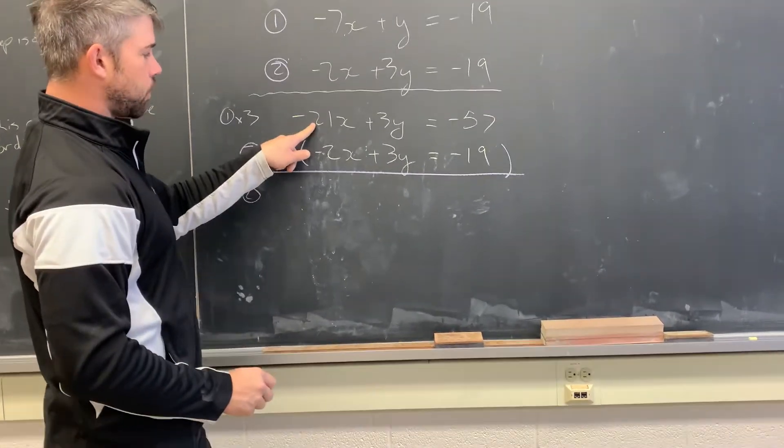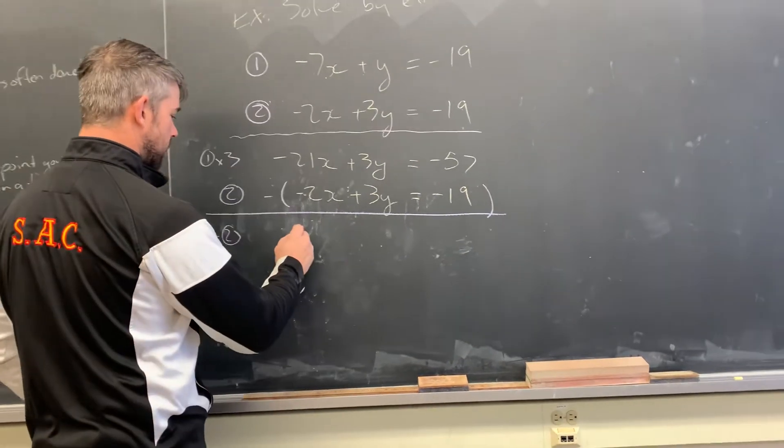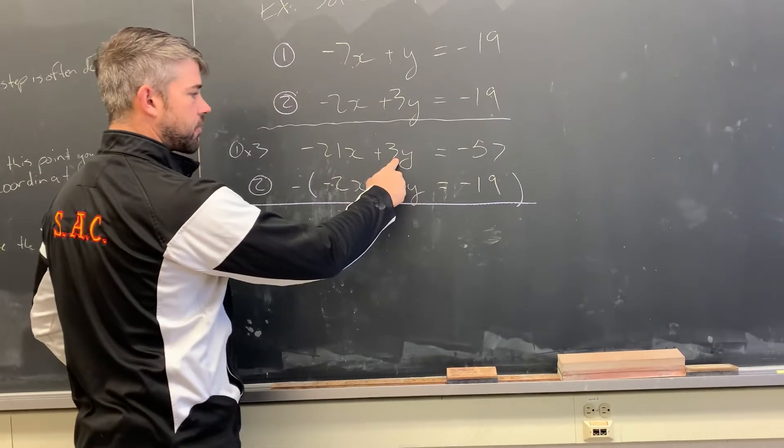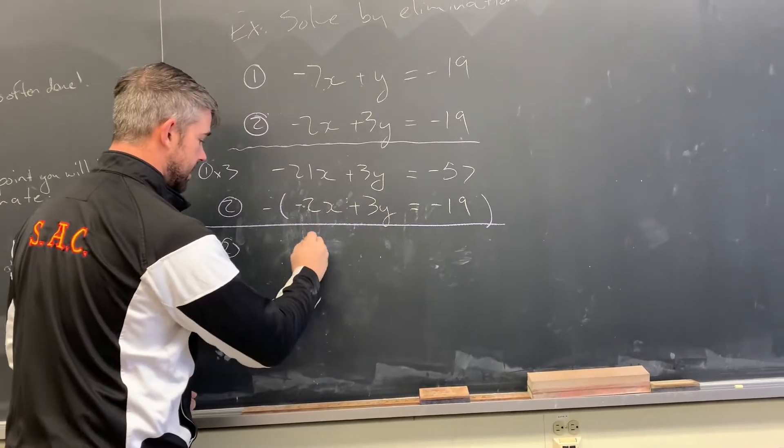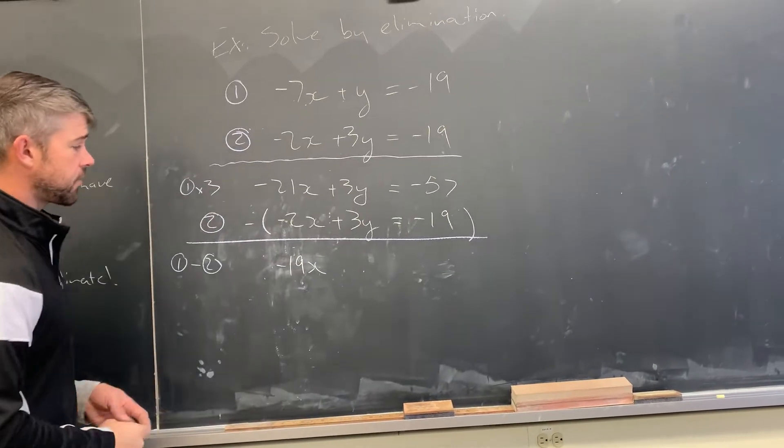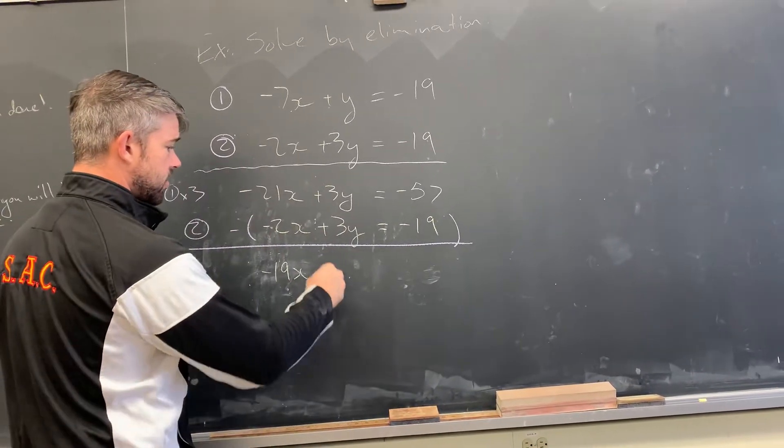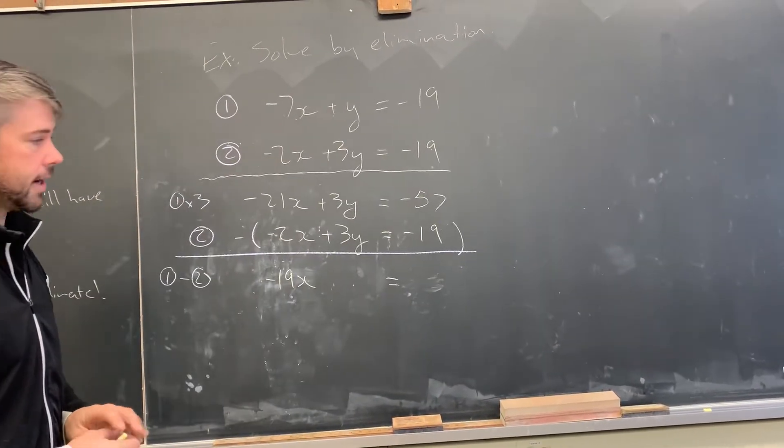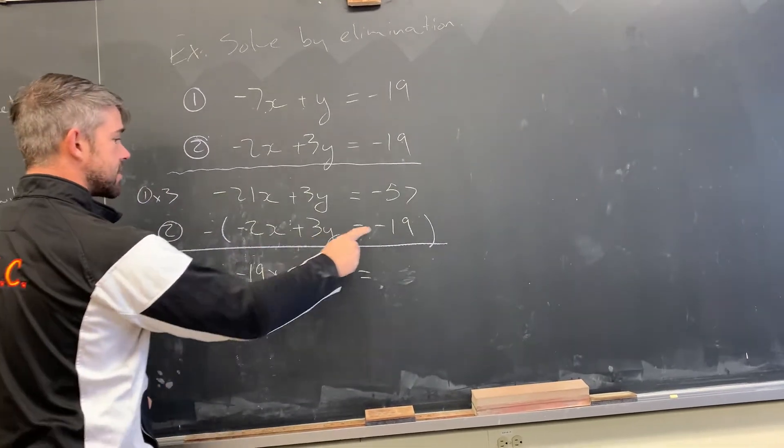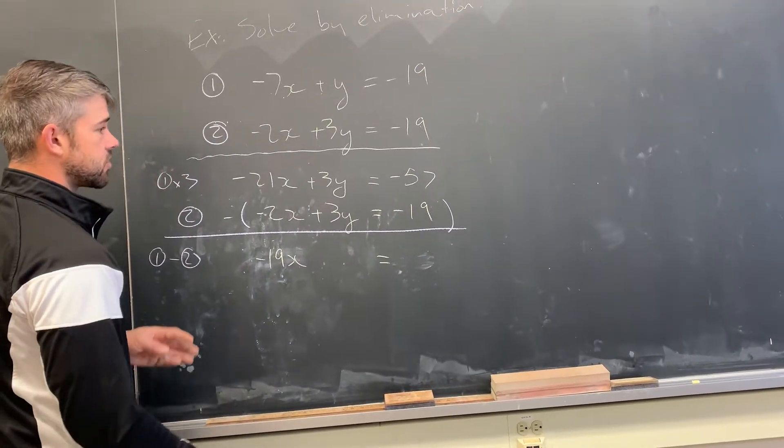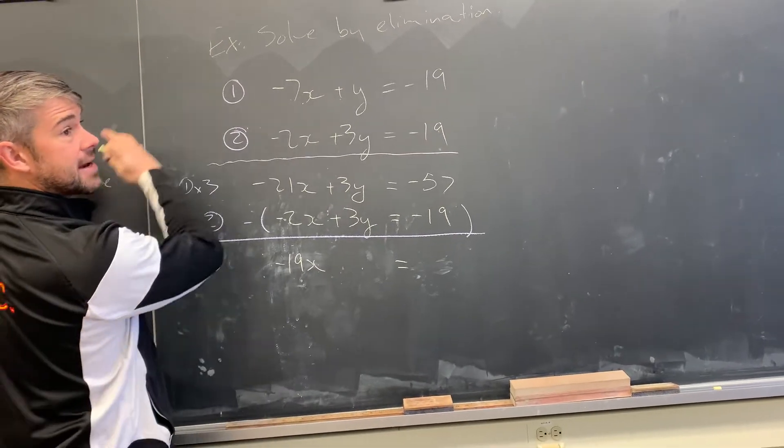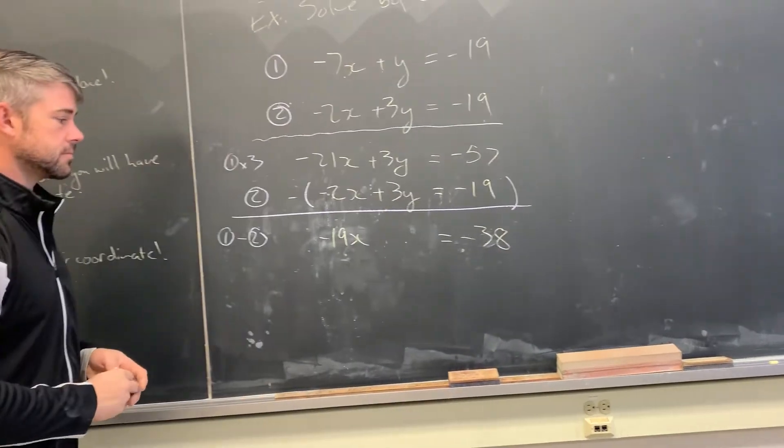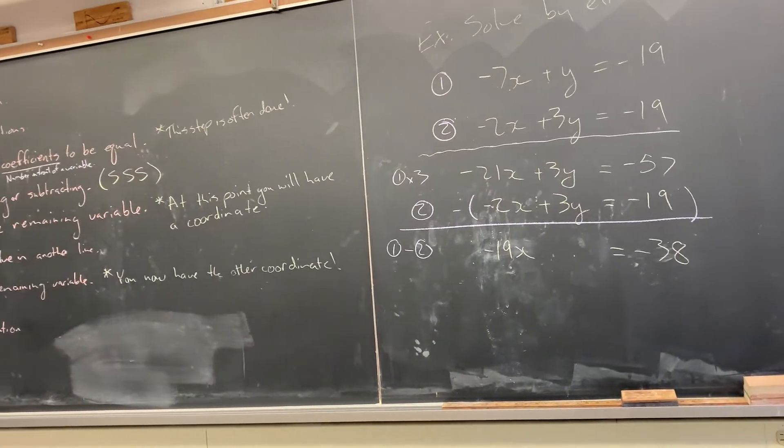So I have negative 21 minus negative 2. I think that's going to work out to be negative 19x. Then I have positive 3y. Sorry, that should be in yellow. Negative 19x. I have positive 3y minus positive 3y. So those will cancel. And that's that whole elimination step. We've eliminated our variable y. Then I have negative 57 minus negative 19. I got to be careful with my integers here. But if I start at negative 57 and I take away a negative, it'll get larger. So it's going to work out to be negative 38.